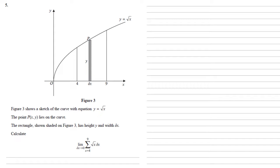Root x delta x is the area of that shaded rectangle because it has a height of y, y equals root x, and a width of delta x.